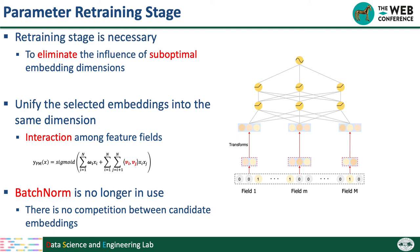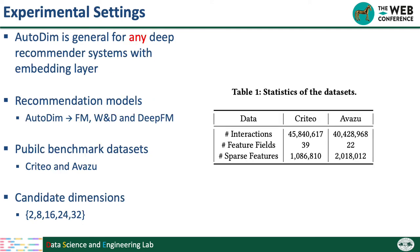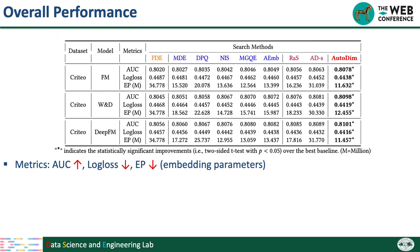Now I will introduce the experiments. Our model is general for any deep recommendation system with embedding layers. In this paper, we select the famous FM, Wide and Deep, and DeepFM as examples. We conduct experiments on two benchmark datasets with five candidate dimensions from 2 to 32. We use three metrics: AUC and log loss measure recommendation performance (higher AUC or lower log loss is better), while EP measures the number of embedding parameters based on selected dimensions, where lower EP means fewer embedding parameters.